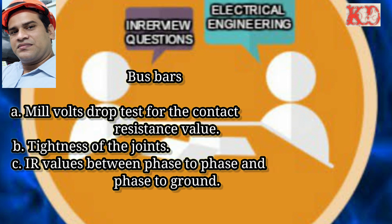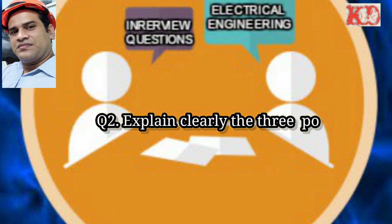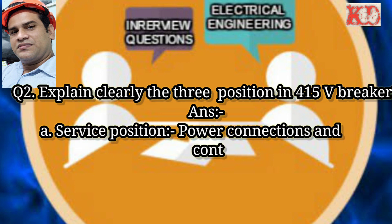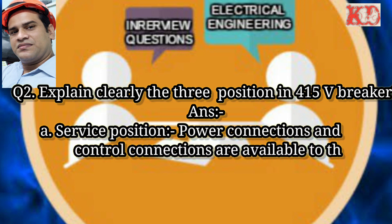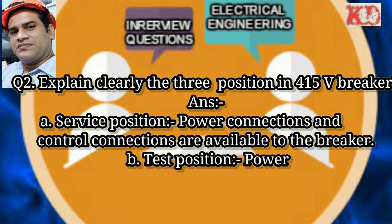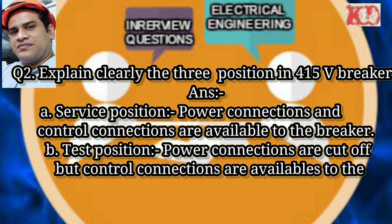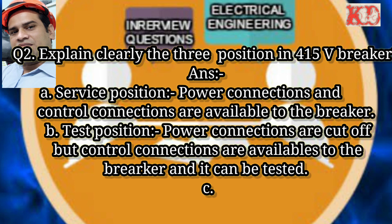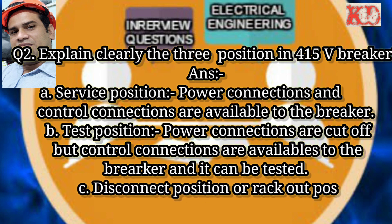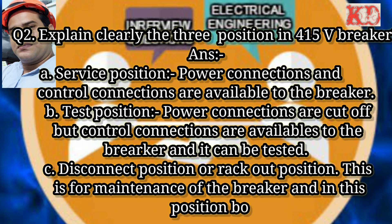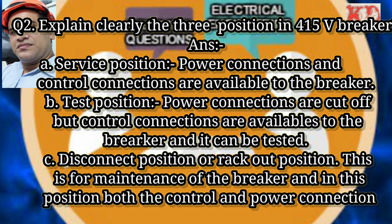Question number two: explain clearly the three positions in a 415V breaker. Answer — first, service position: power connections and control connections are available to the breaker. Second, test position: power connections are cut off but control connections are available to the breaker, and it can be tested.